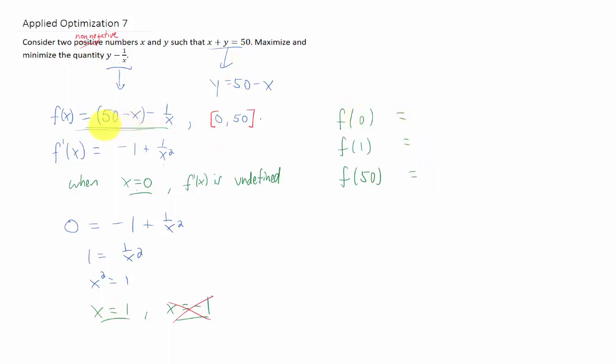So if we try to plug x equals 0 into this function here, we're going to get a 0 in the denominator, so that doesn't work. If we plug x equals 1 into our function, we're going to get 50 minus 1 minus 1, which is 48. And if we plug our x value of 50 into this function, we're going to get 50 minus 50 minus 1 over 50, which is negative 1 over 50.